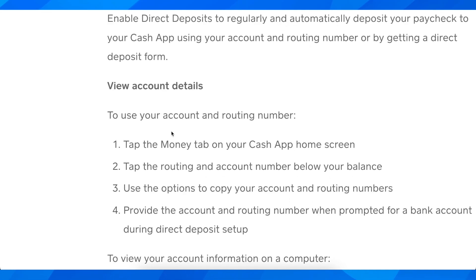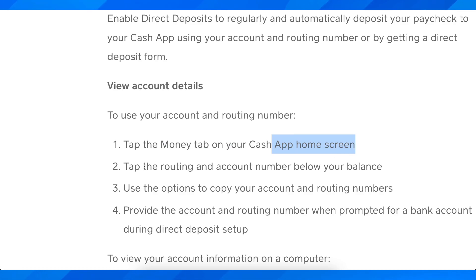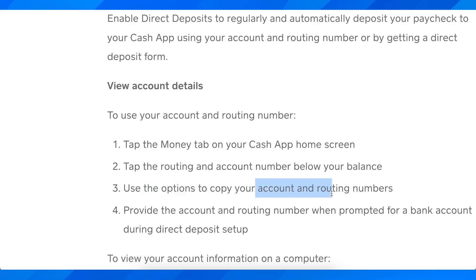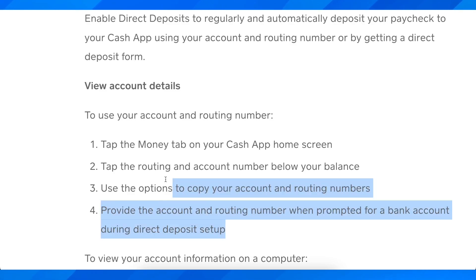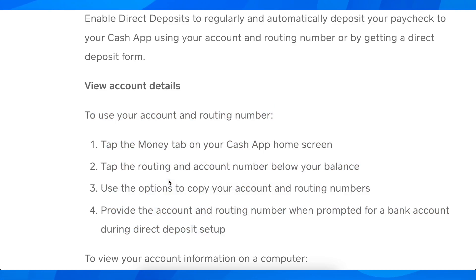So basically what you're going to have to do is simply tap the money tab on your Cash App home screen, then tap the routing and account number below your balance and use the option to copy your account and routing numbers. Basically you're going to have to provide the account and the routing number when prompted for a bank account during direct deposit setup. So basically this is how you can find your Cash App routing and account number.